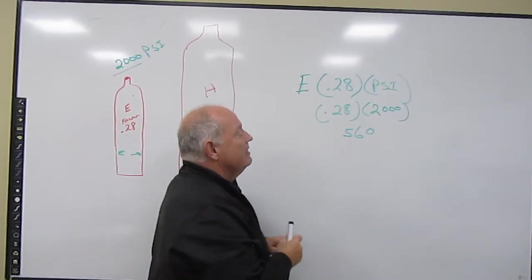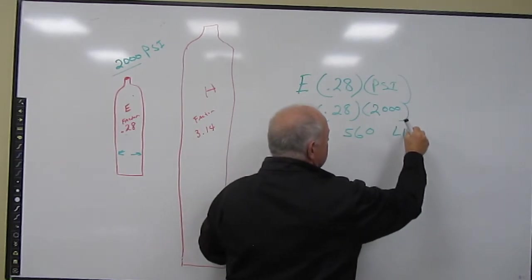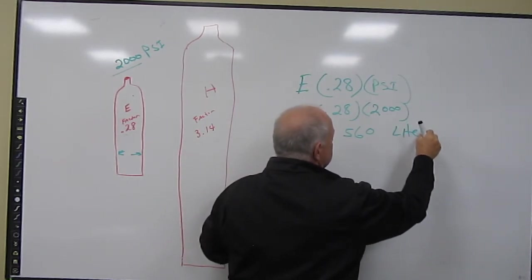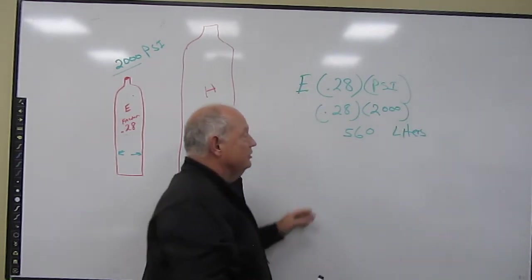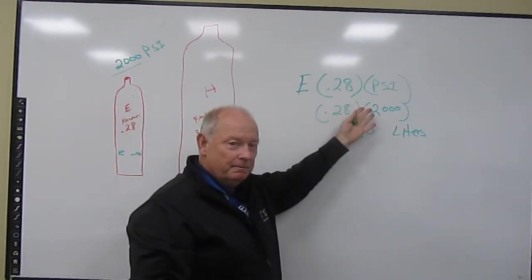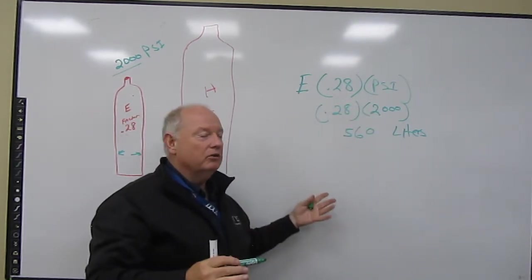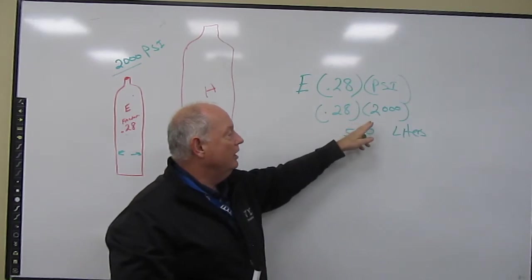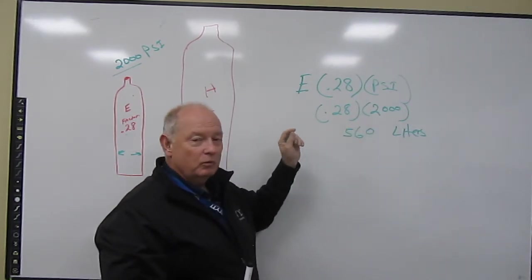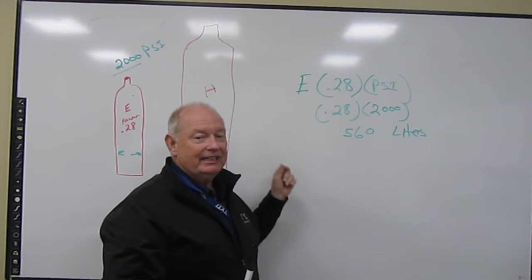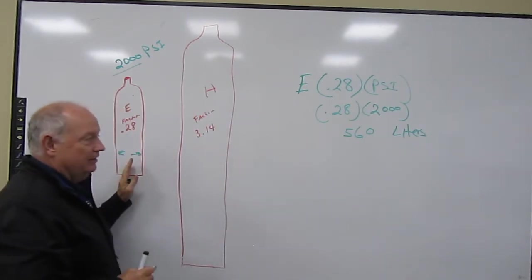560 what? This comes out into liters. So now we've converted the pressure into a volume. So we know at 2000 we have 560 liters in the E-cylinder.